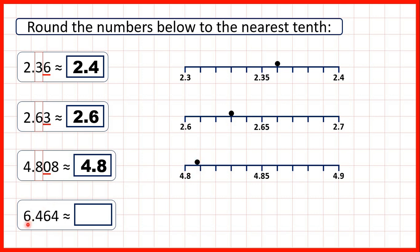Finally we have 6.464. So we can find our tenths digit. Again it's always the first digit after the decimal point.